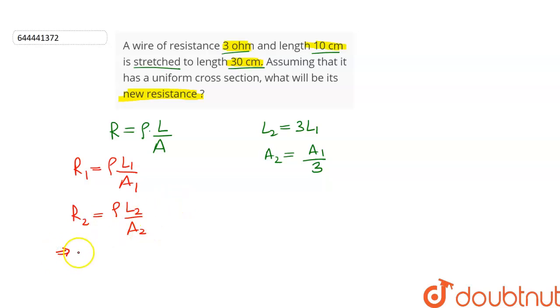We will get R2 is equal to rho into L2, which is 3 times L1, upon A2, which is A1 upon 3. As it is A1 divided by 3, the 3 comes into the numerator.